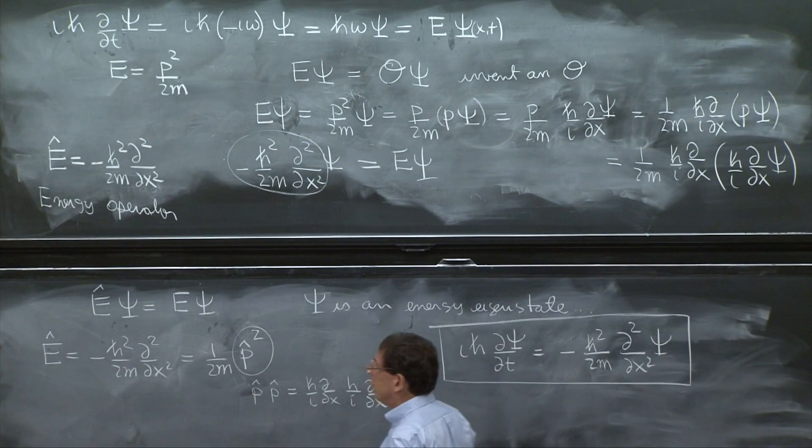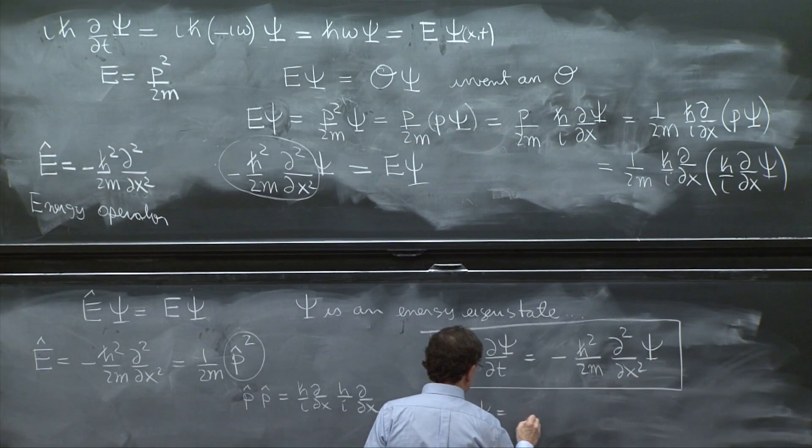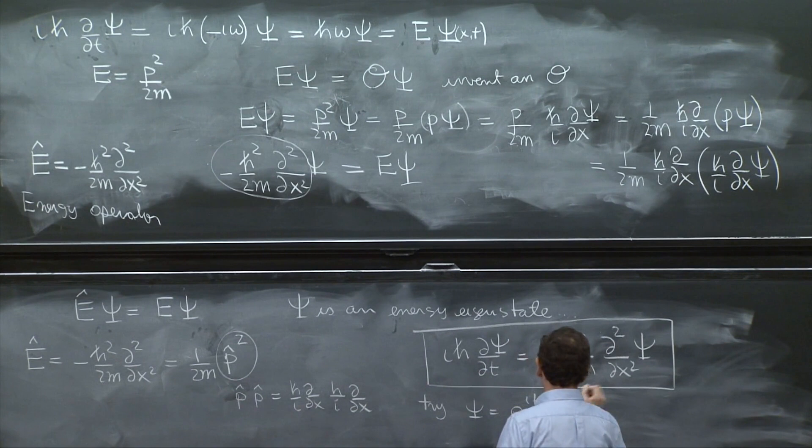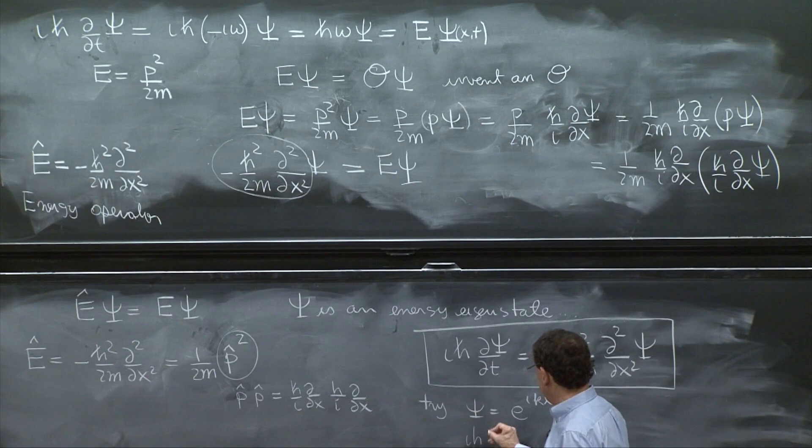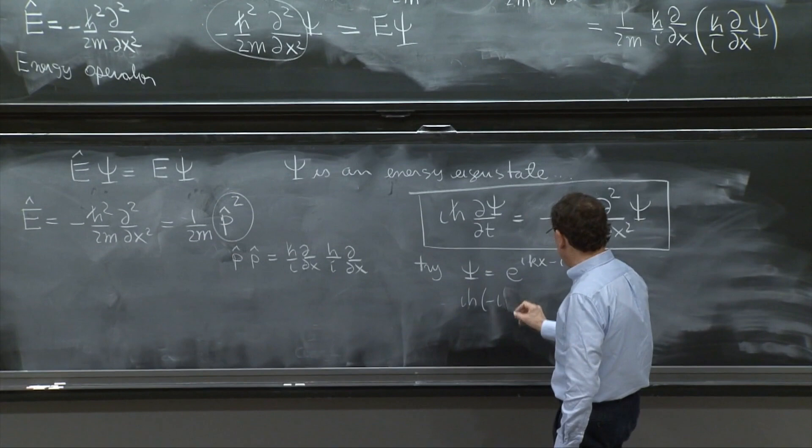So if you try, again, psi equal e to the ikx minus i omega t, what do we get? On the left-hand side, we get ih minus ih minus i omega psi.